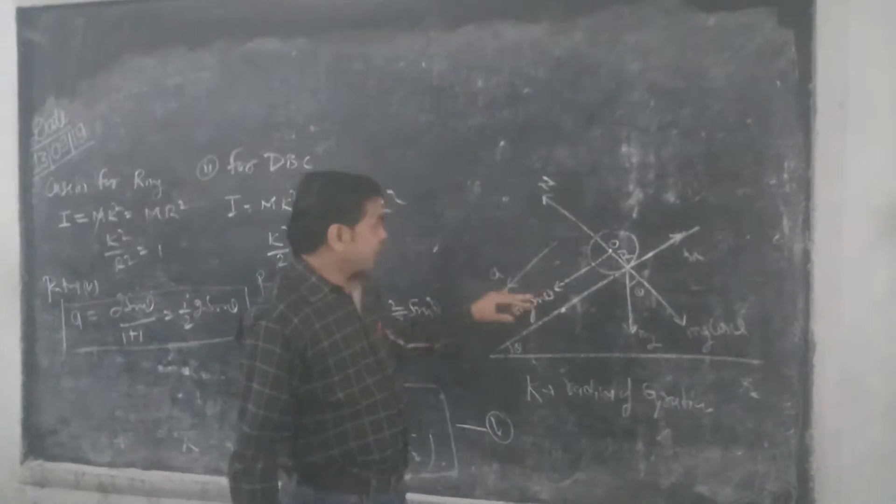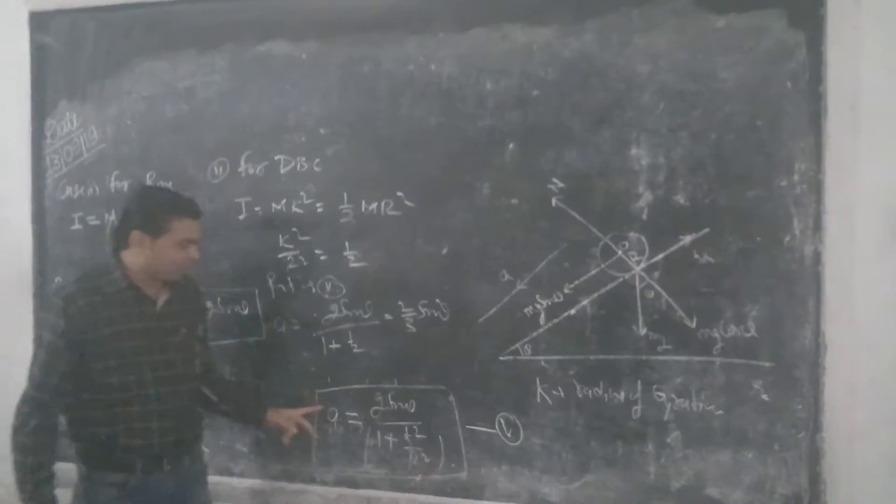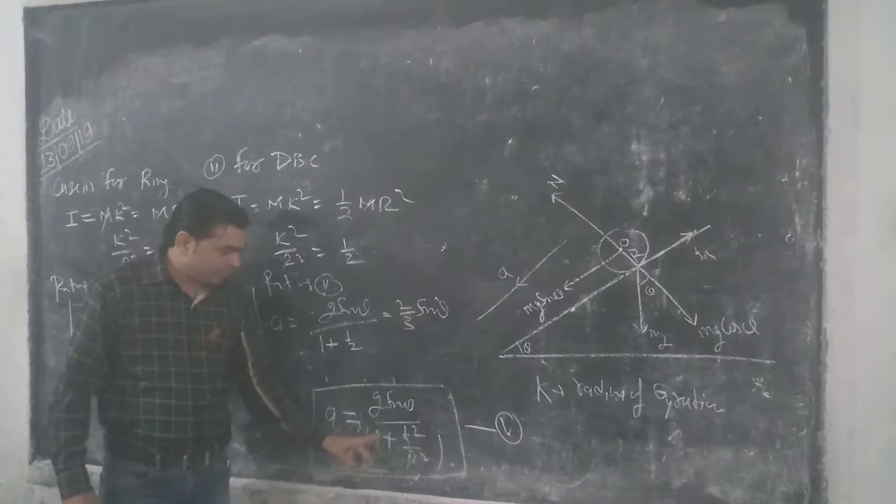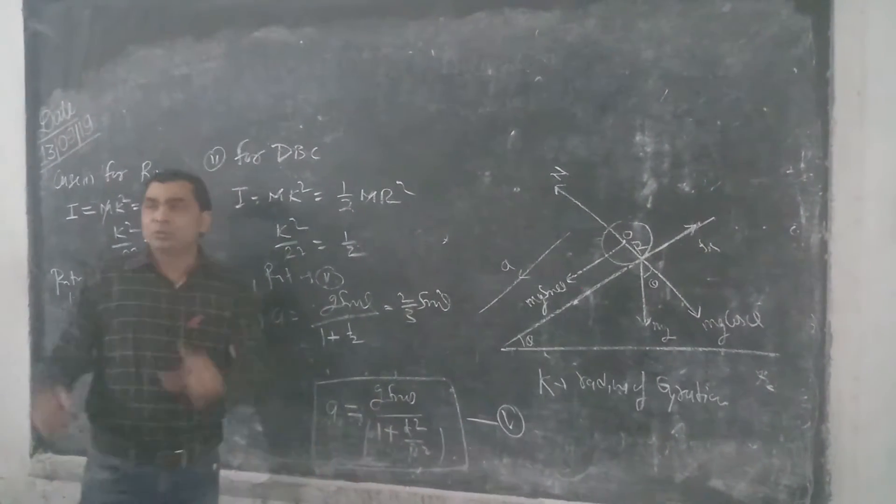radius r. The acceleration A, we will find after calculation, A equal to g sine theta divided by 1 plus k square upon r square. For any body